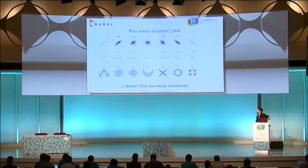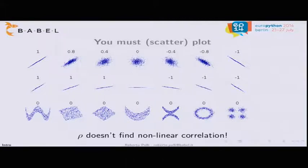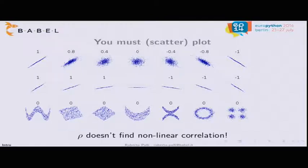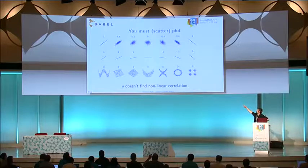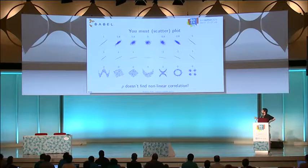But anyway, you must plot. These are various scatter plots with their Pearson value. On the first line we can see a relation value of one. When the data begin to be unrelated, that value goes to zero. Then it starts to be a negative value when the relation is inverse — when one data set grows and the other decreases. But there are even non-linear cases where we have a zero correlation value but the data are actually related, with patterns in the data. So you should always plot.